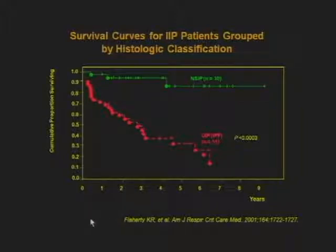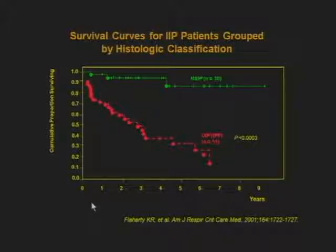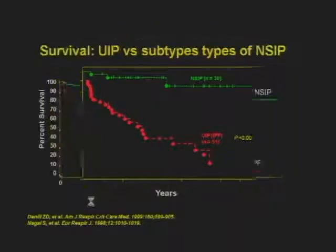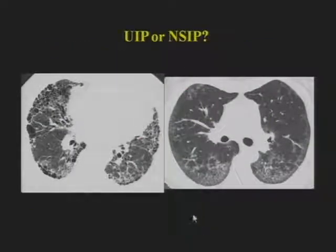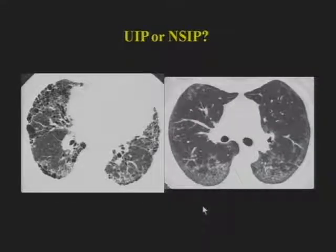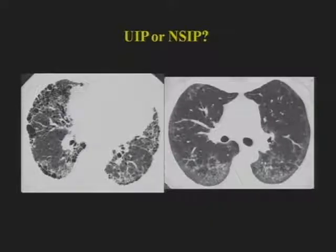Survival curves comparing NSIP to UIP-IPF over nine years show that IPF has a much worse prognosis than NSIP of all types. Distinguishing cellular NSIP from fibrotic NSIP shows that cellular NSIP has a much better prognosis than UIP, with fibrotic NSIP somewhere in between. The two classic comparative appearances: on the left, honeycombing at the lung bases — classic UIP pattern, likely IPF; on the right, ground glass opacity with subpleural sparing — classic NSIP.